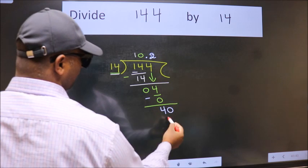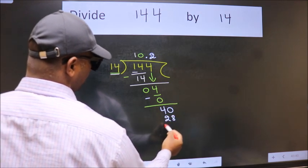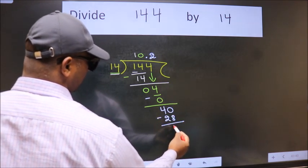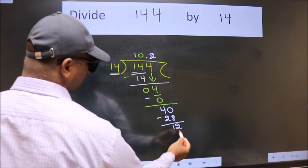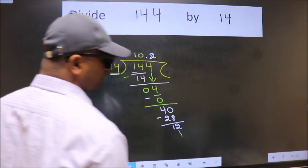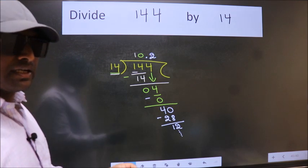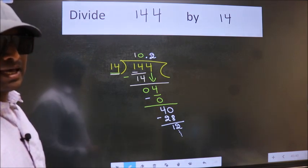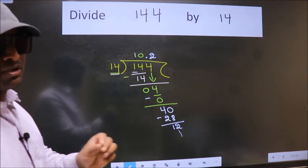14 twos, 28. Now we subtract, we get 12, and you continue the division. I am not doing that. Did you understand where the mistake happens? You should not do that mistake.